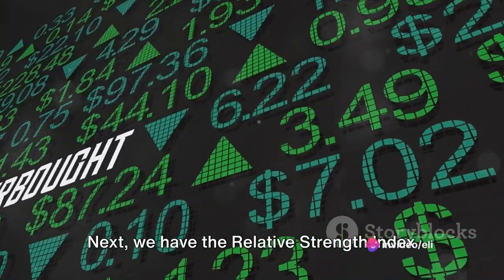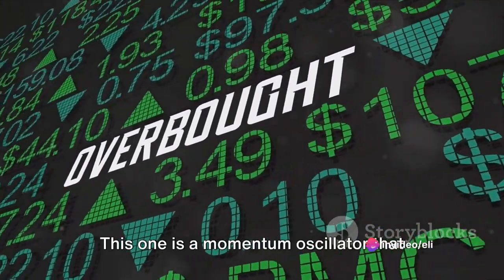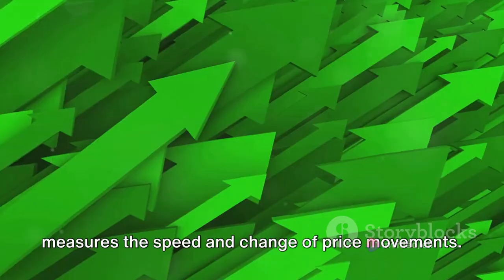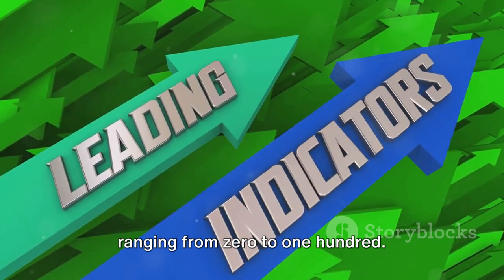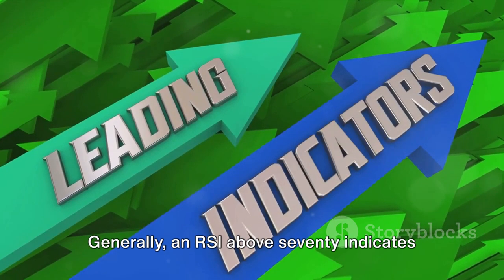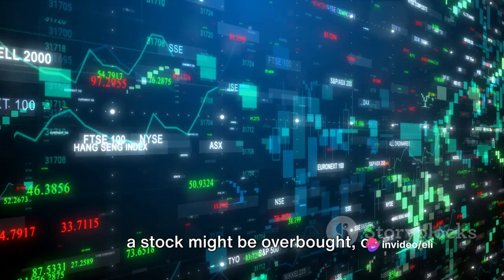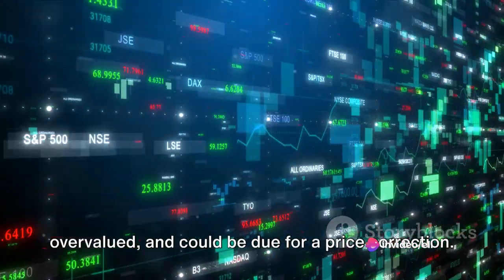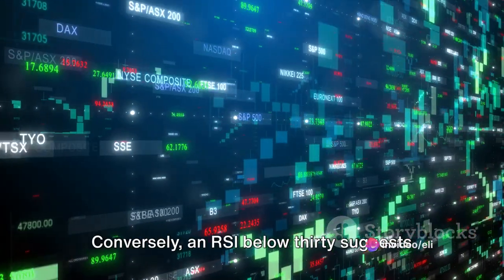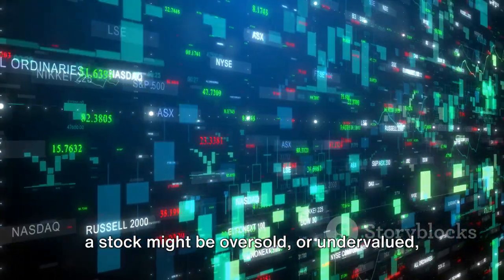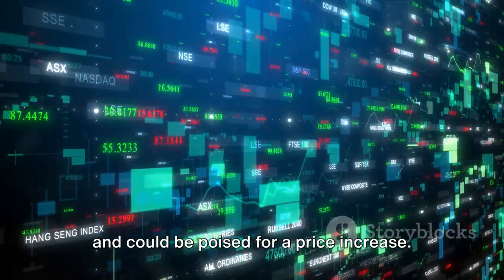Next, we have the relative strength index or RSI. This one is a momentum oscillator that measures the speed and change of price movements. It's like a speedometer for stocks, ranging from 0 to 100. Generally, an RSI above 70 indicates a stock might be overbought or overvalued and could be due for a price correction. Conversely, an RSI below 30 suggests a stock might be oversold or undervalued and could be poised for a price increase.